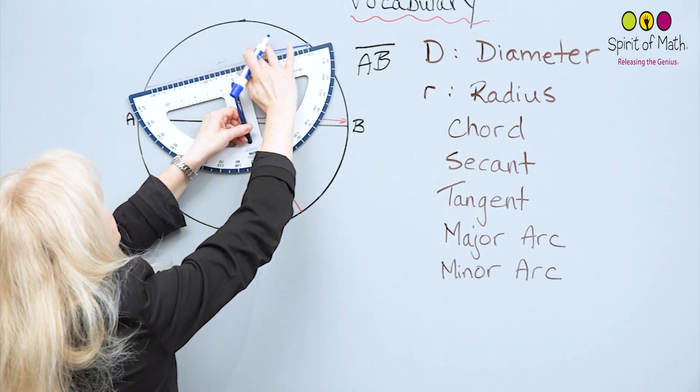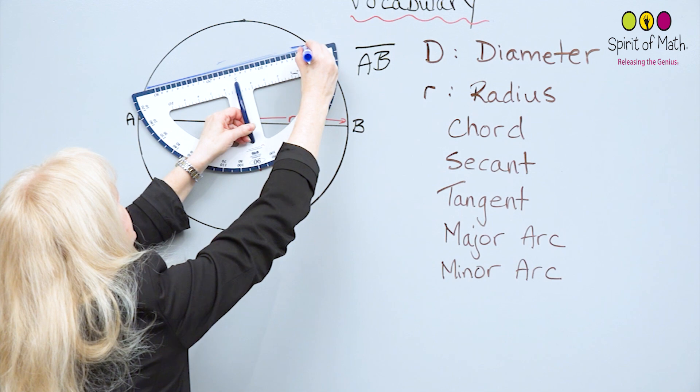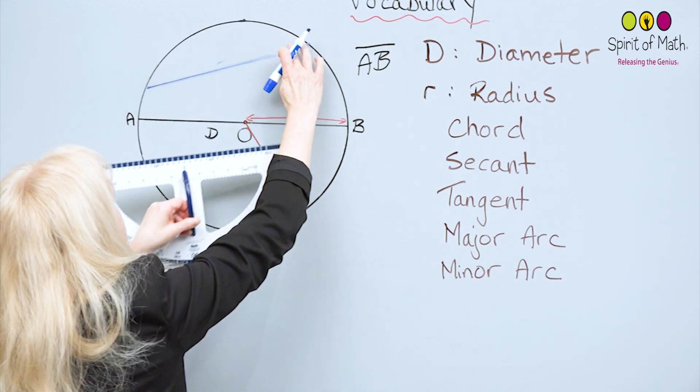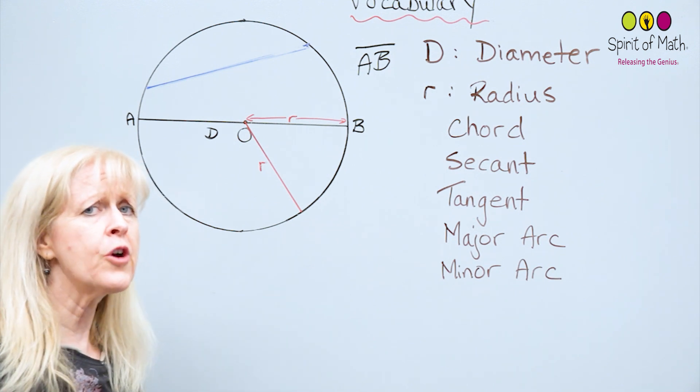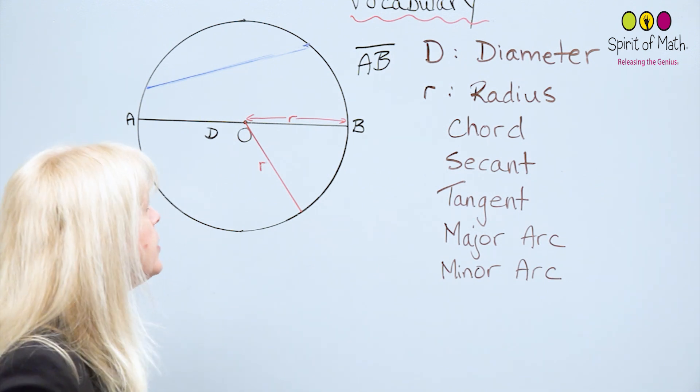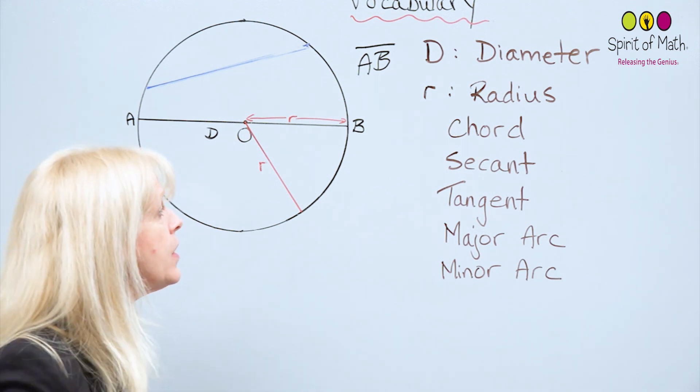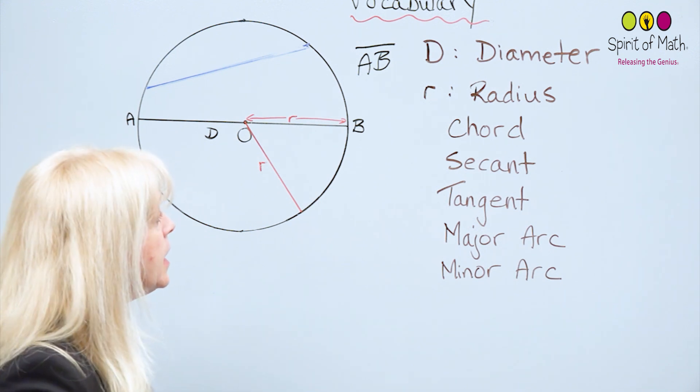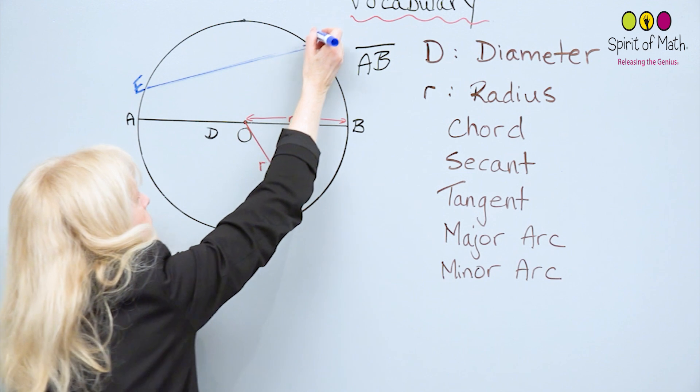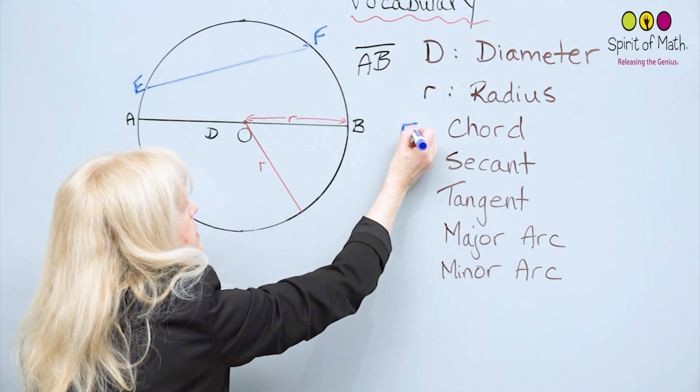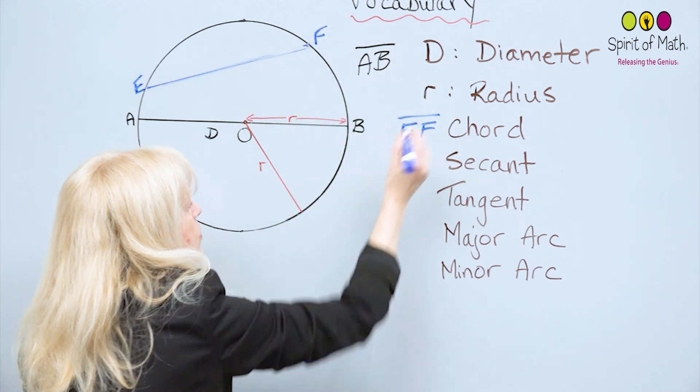Now, this chord is important because a chord is used for a lot of circle geometry, and it also helps to define a couple of other things, which we'll get to in a second. I'm going to call this EF, and that way you can see that this is EF, and that's the chord.